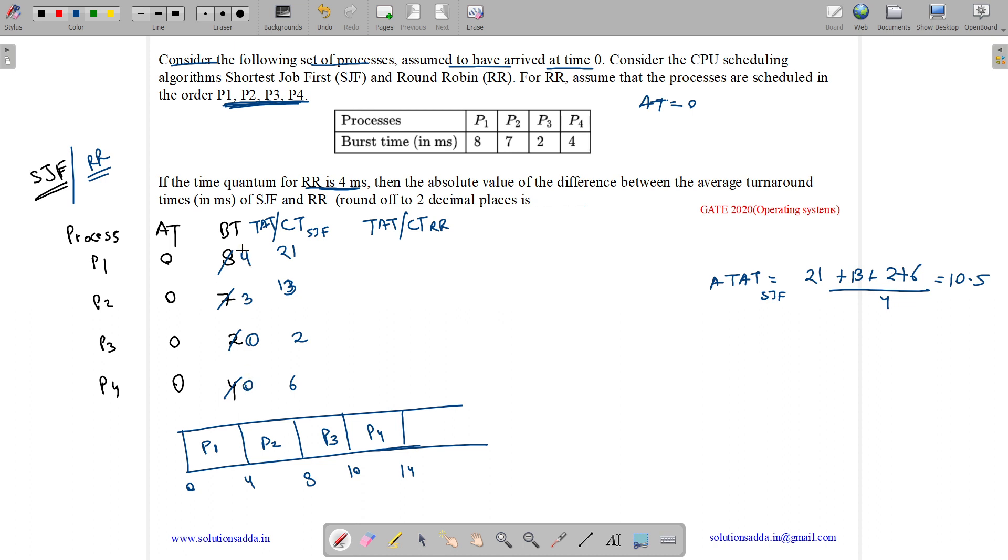Then these are completed so we should do P1, P2. So P1 gets scheduled again from 14 to 18 with remaining time as zero. Now P2 only has 3 remaining time. So P2 gets scheduled from 18 to 21.